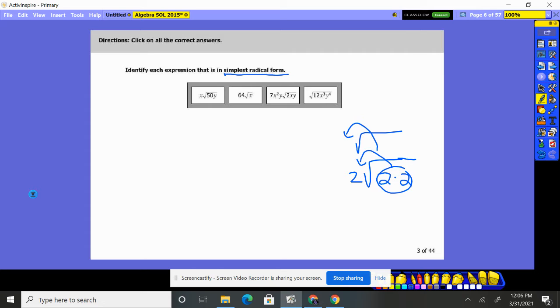So let's look. We have X square root of 50. Is that in simplest radical form? 50 can be broken down and I guarantee you something is going to come out. If we did a factor tree of 50, we'd have five times 10, prime can't go any further, two and five.